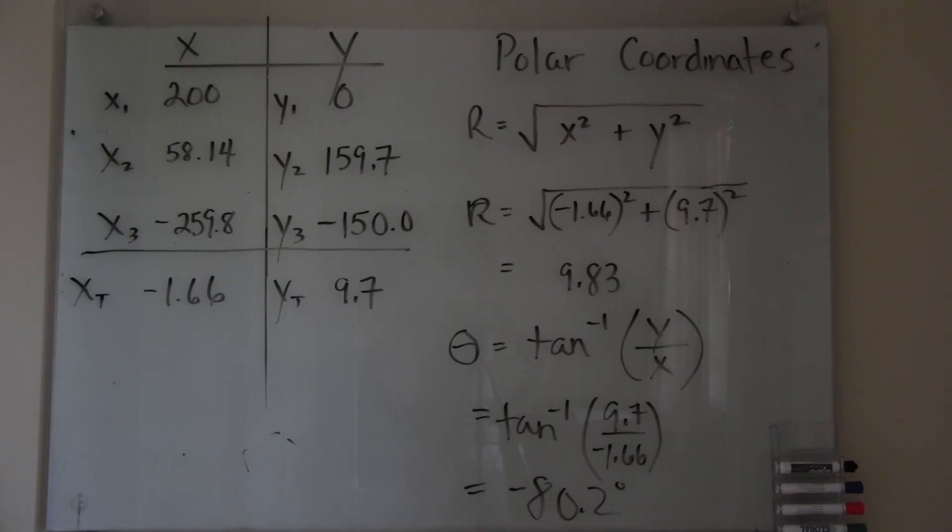To get the magnitude of the polar coordinate, you will take the square root of the sum of the squares of the Cartesian coordinates. I have done so and gotten a magnitude of 9.83, and recall the unit here would be grams. To get the angle, I have taken the tangent inverse of the y component divided by the x component. I have done so and gotten an angle of negative 80.2 degrees.